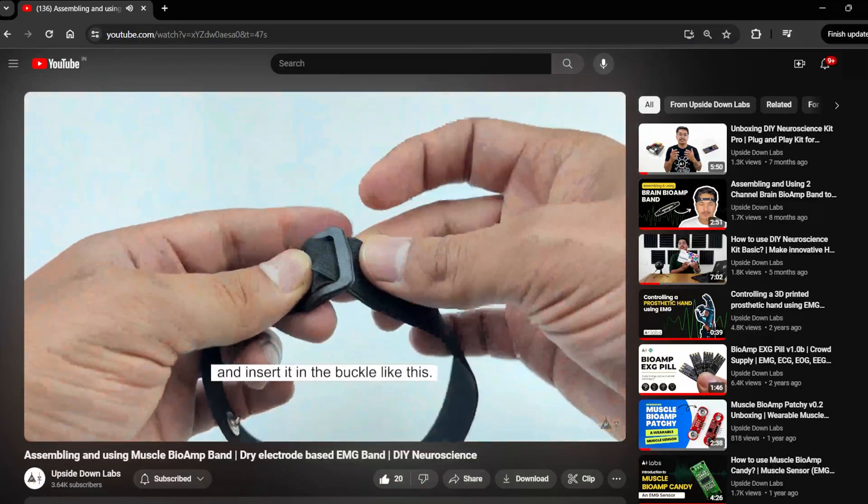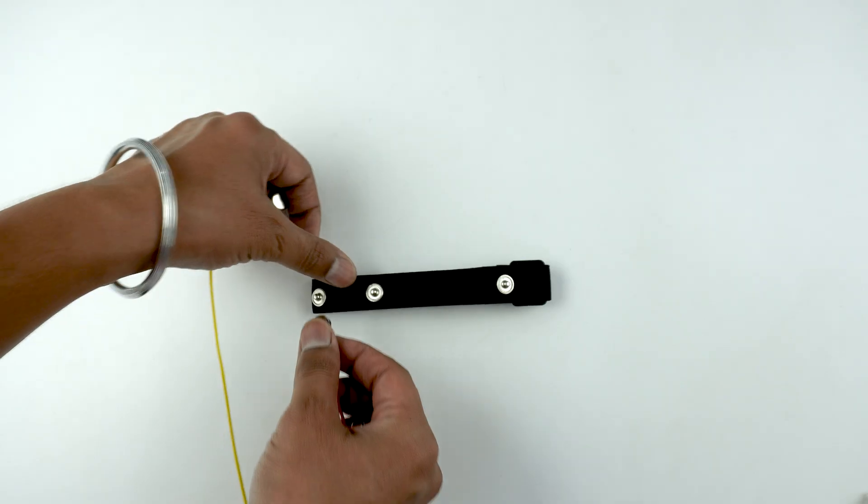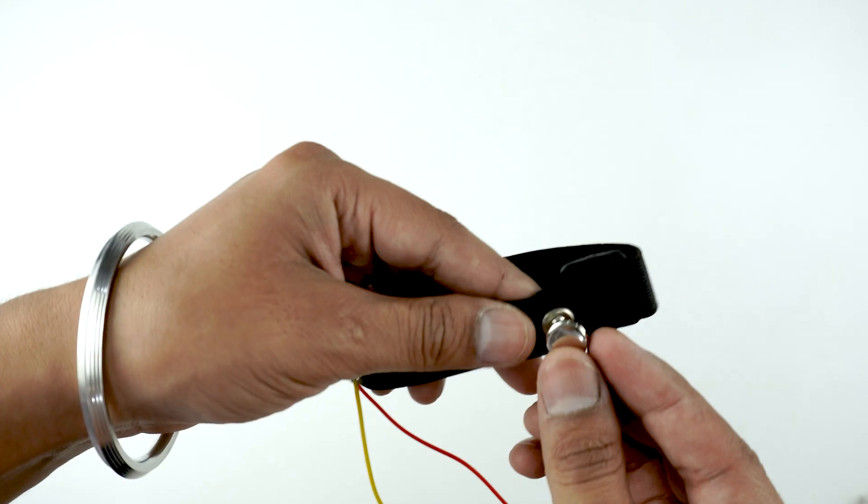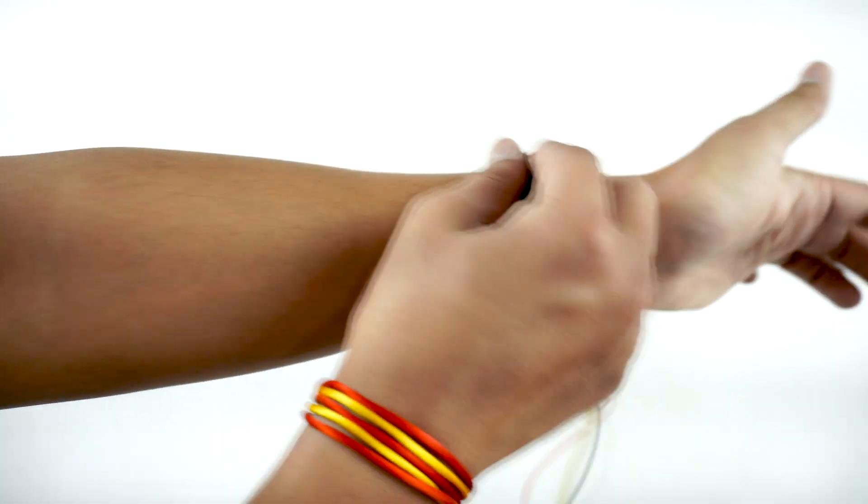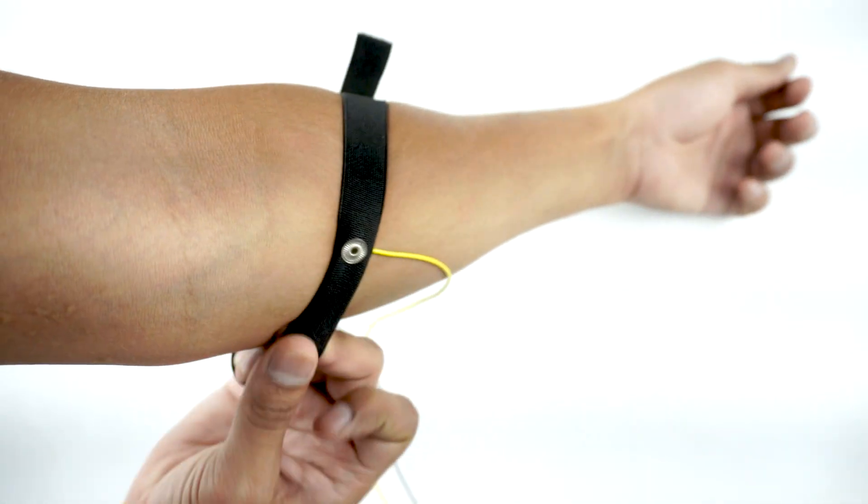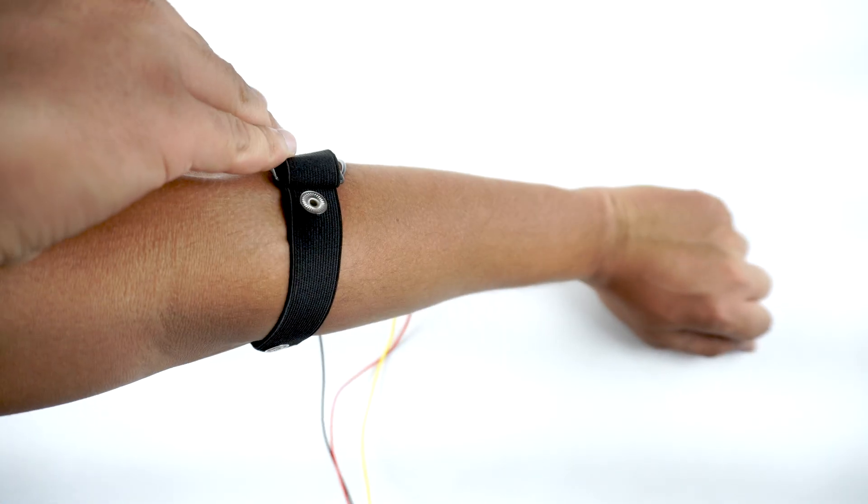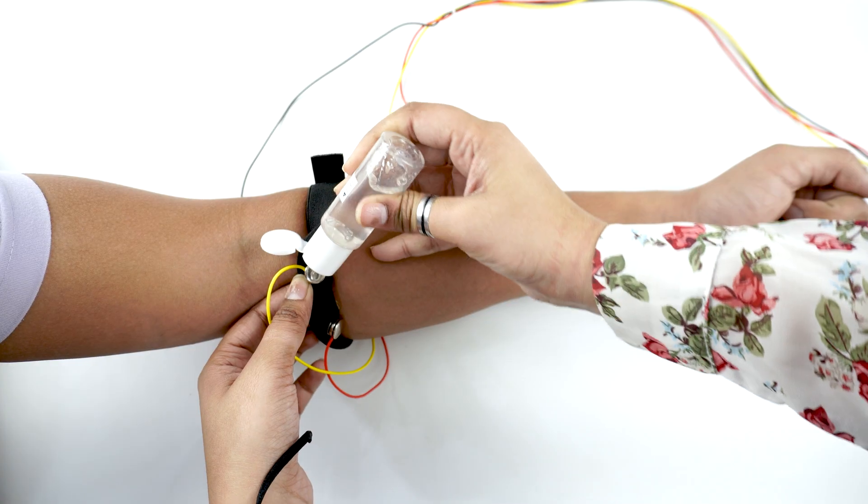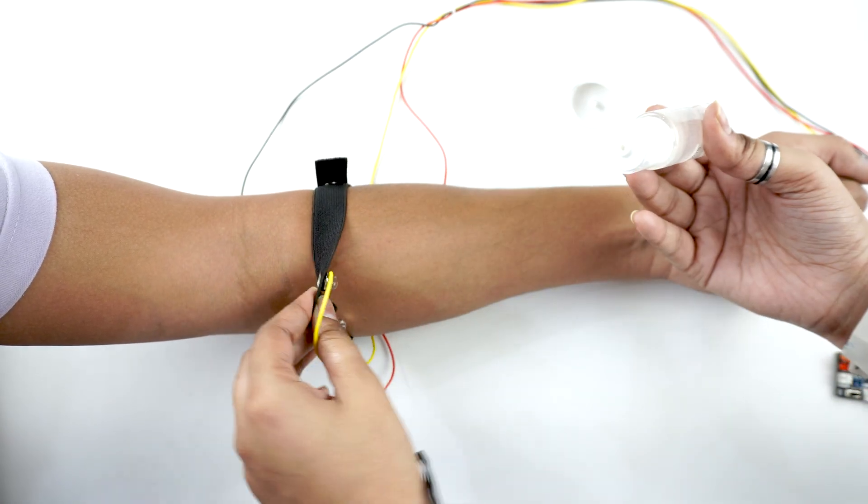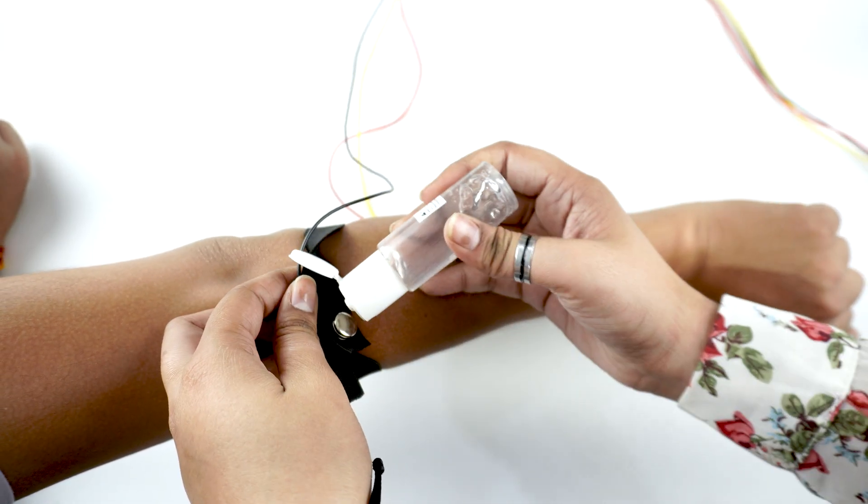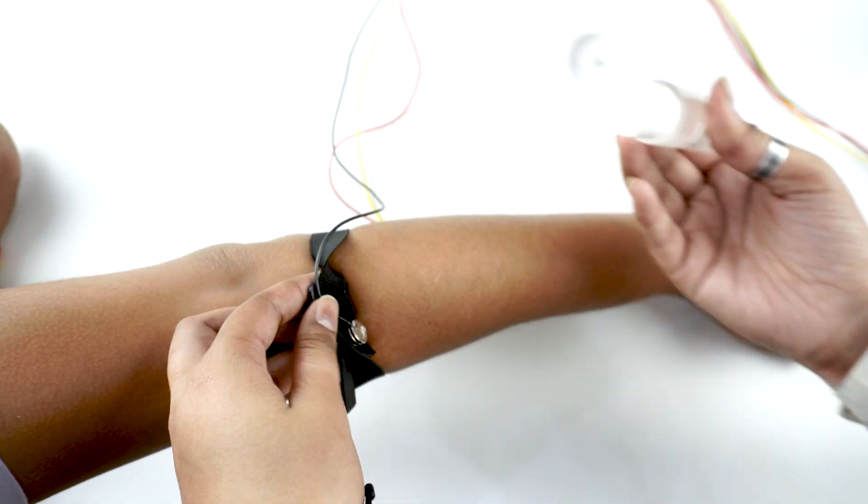You can find the link to that video in the description box below and somewhere in the top right corner. Snap the BioAmp cable on the muscle BioAmp band in such a way that IN positive and IN negative are placed on the arm near the ulnar nerve and reference on the far side of the band. Now put a small drop of electrode gel or Ten20 paste between the skin and dry electrodes to get the best signal acquisition.